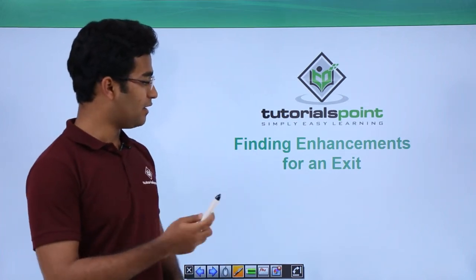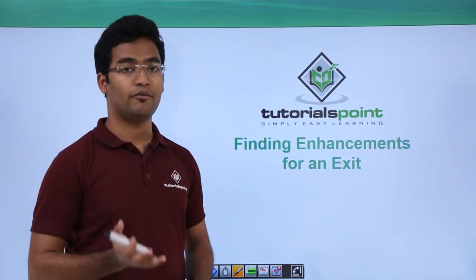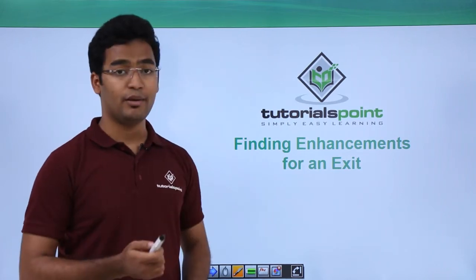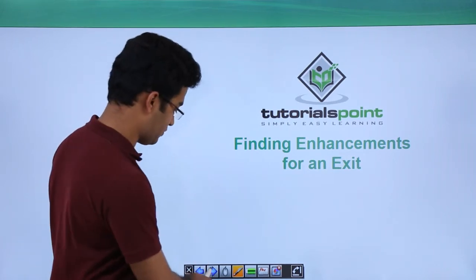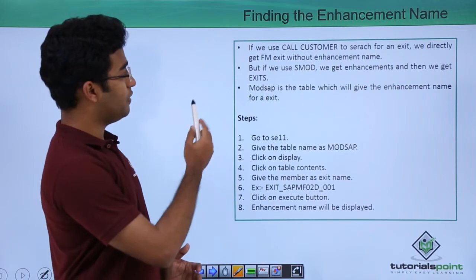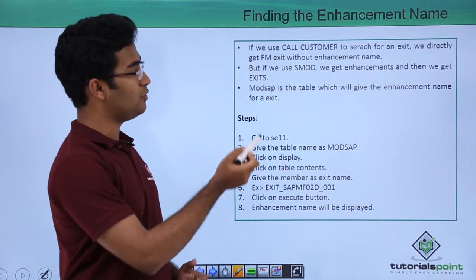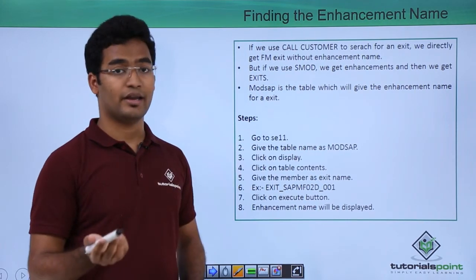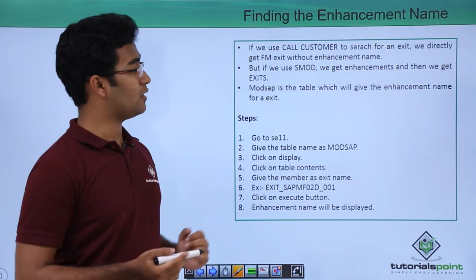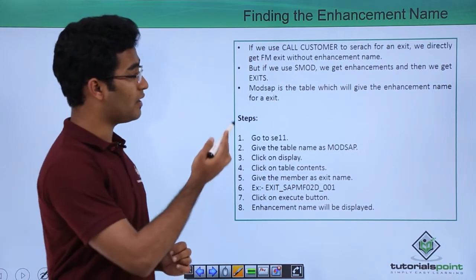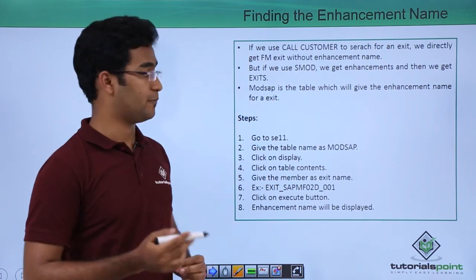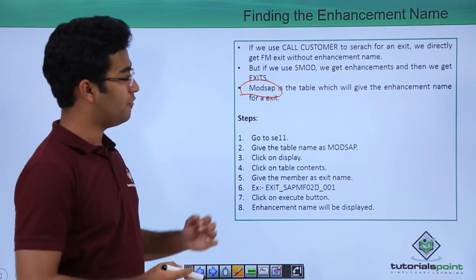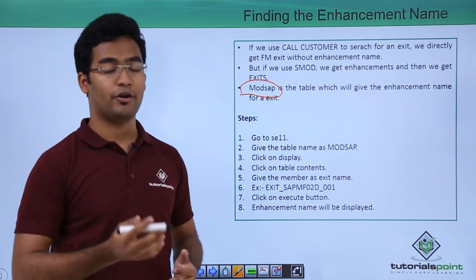In this video we will find an enhancement for a particular exit. In the previous video we have already searched an exit. While using call customer to search for an exit we are directly getting the function module exit without getting the enhancement name. But if we are using the SMOD transaction we get the enhancement and then we get the exit. MODSAP is a table where we get the enhancement name for a particular exit.